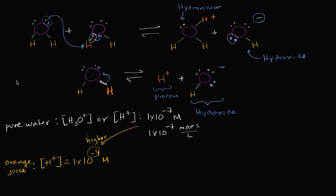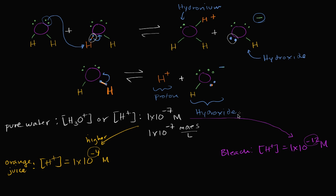We could also look at something that has a lower concentration — say, bleach. I actually looked it up on the Clorox website. Clorox bleach says their hydrogen ion concentration is approximately 1 times 10 to the negative 12 molar. This is a much lower concentration than you would have in just pure water at 25 degrees Celsius. The exponent is more negative — this is a lower concentration.